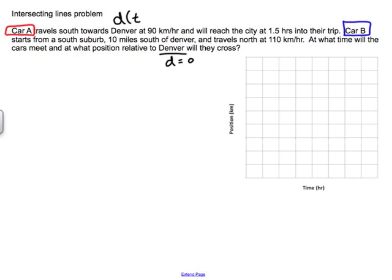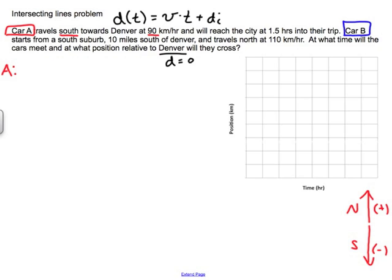The general form of the function is: D as a function of T — the position is a function of time — equals the vehicle's velocity multiplied by time plus their initial position. For Car A, this car is traveling south at 90 km/h. I'm going to define north as the positive direction and south as the negative direction, using those sign conventions for the entire problem. So Car A's velocity is −90 km/h, giving us D_A(T) = −90 km/h × T + D_i. I don't know D_i yet for this vehicle.